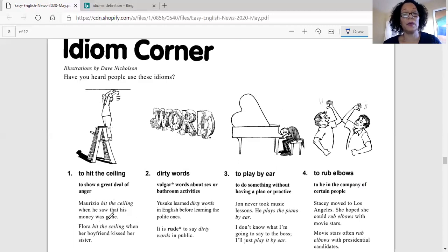Laura hit the ceiling when her boyfriend kissed her sister. Oh, sounds like a bit of drama there. But again, does it mean that Laura hit the ceiling with her fists on top of a ladder? No, it means that she was very angry. She was very upset. She was very mad.